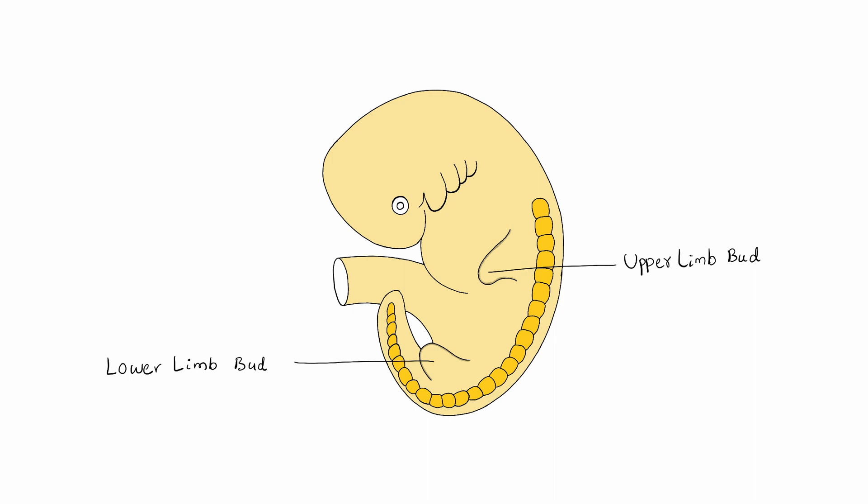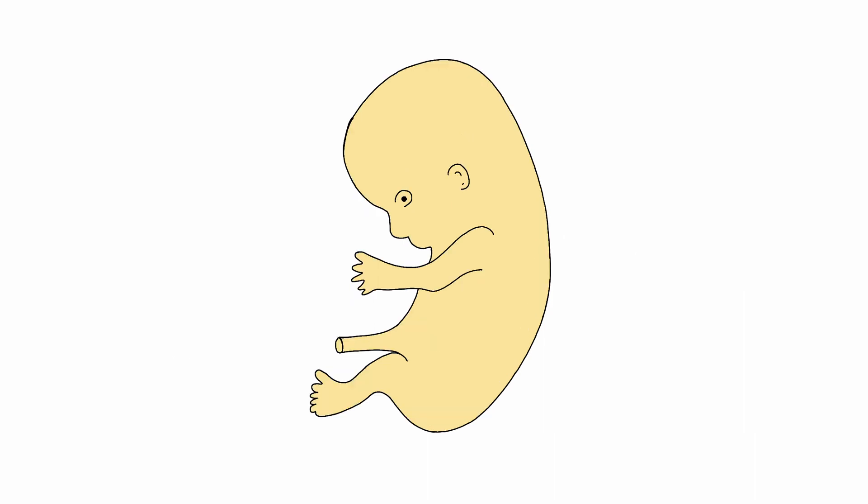During early development, all four limbs appear as paired limb buds — first as simpler flipper-like appendages, so the upper and lower limbs are similar in appearance. Each has dorsal and ventral surfaces and pre-axial and post-axial borders. The pre-axial border faces towards the head. Later in development, the ends of the limb buds become expanded and flattened to form the hand and foot plates, in which the digits develop. The digits nearest to the pre-axial border are the thumb and big toe.